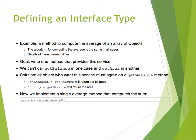The algorithm for computing the average is the same for all cases, however the details of measurement for each object may be different. For example, if you have a bank account the getMeasure method should return the balance, but if you have a country as an object then getMeasure should return the area. The solution is that all objects who want to use this average service agree on a getMeasure method with the same signature.